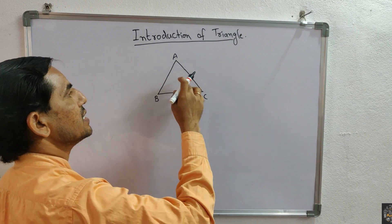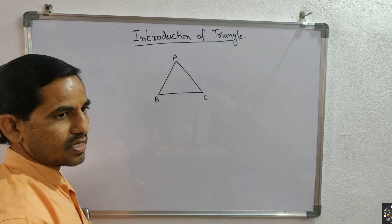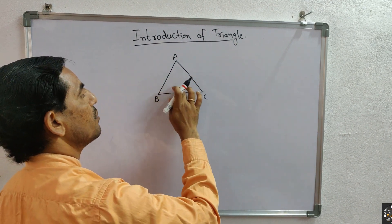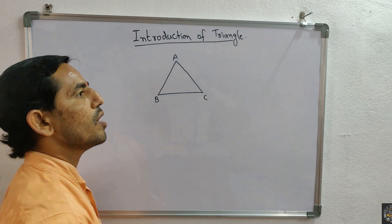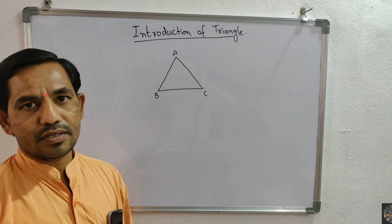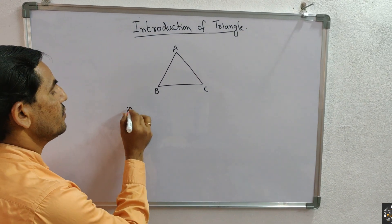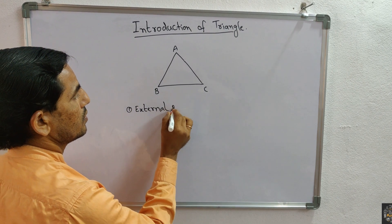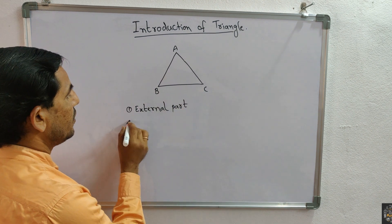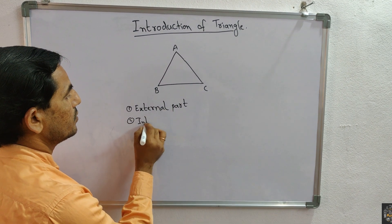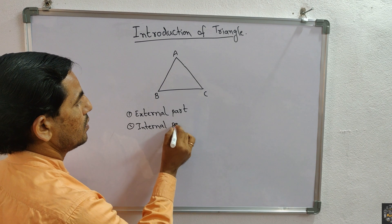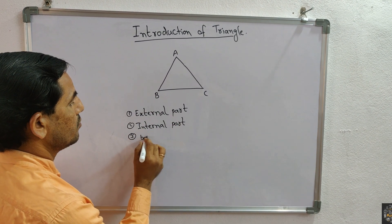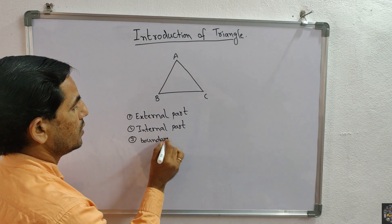A triangle divides the plane into three parts: the external part, the internal part, and the boundary part. The three parts are: first, the external part; second, the internal part; and third, the boundary part.